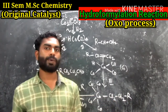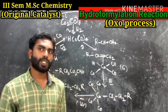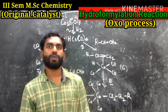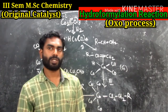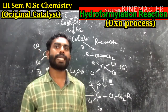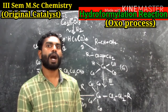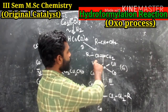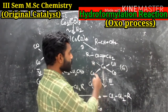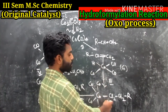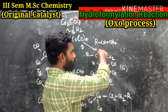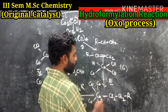Step 3 involves the insertion of the alkene into the Co–H bond to give an alkyl intermediate.